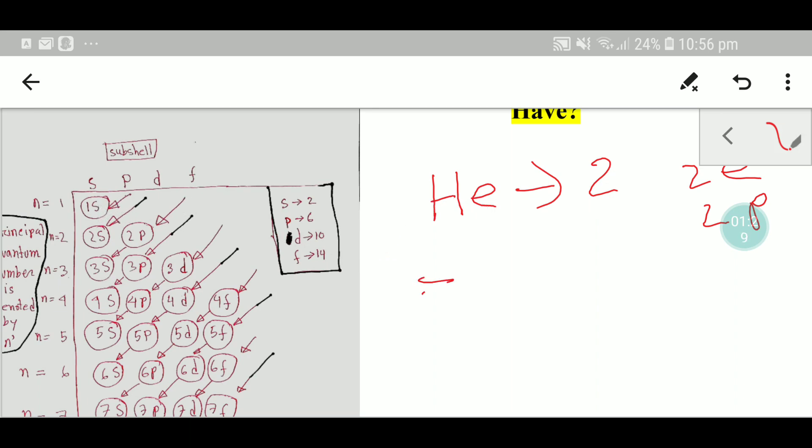Since 1s can take maximum 2 electrons, the electronic configuration of helium will be 1s².